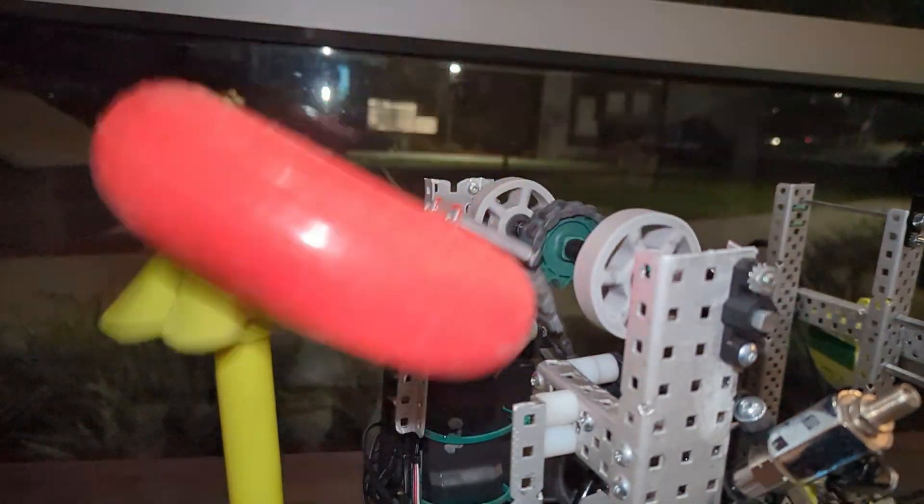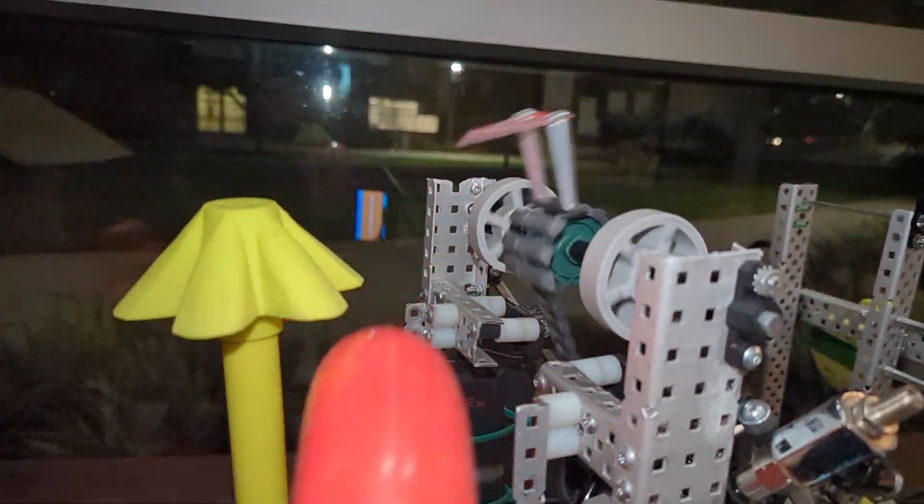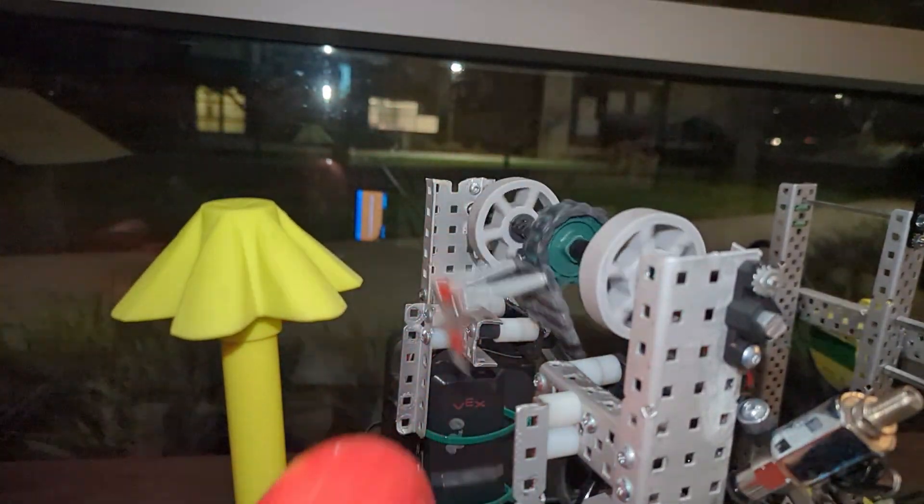If your ring is doing this, it probably means your goal is too far away from your top roller. You can fix this either by moving your top roller closer to the goal or the goal closer to the top roller.